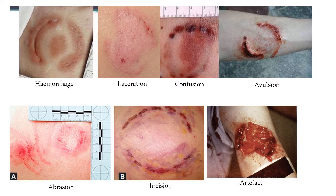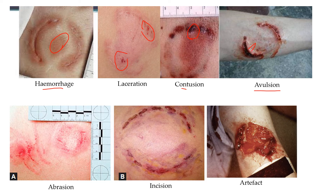Looking at images to illustrate the types: in hemorrhage bite marks, internal bleeding causes a red appearance due to suction from the mouth and tongue. Laceration bite marks show a slight opening of the skin with bleeding. Contused bite marks show pressure damage and completely damaged blood vessels with bruising. Avulsion shows skin being removed or torn by the biting force.